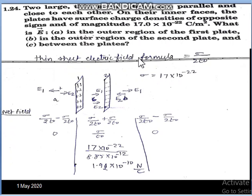First of all, due to a single sheet, the electric field is σ/(2ε₀). We will be taking the help of this formula. The idea is: because two sheets are given, we have to first find the electric fields E₁ and E₂ due individually to these two sheets in every region.